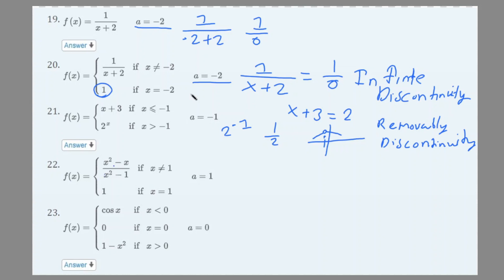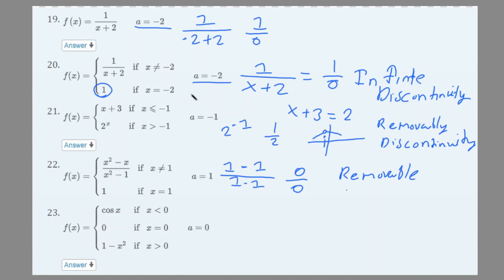Number 22 involves a piecewise function: (x² − 1)/(x − 1) for one piece, and the value 1 at x equals 1. At x equals 1, the y-value is 1, so when we plug in 1 we get (1 − 1)/(1 − 1) = 0/0. This says as the function approaches 1, it approaches 0, but f(1) = 1. So this is also a removable discontinuity.